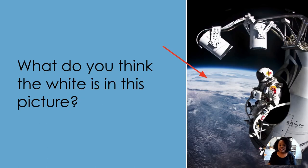This is a picture of Felix Baumgartner standing outside of the Red Bull Stratos right before he jumps. What do you think the white is in this picture?